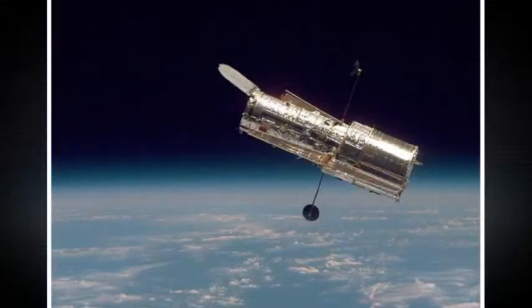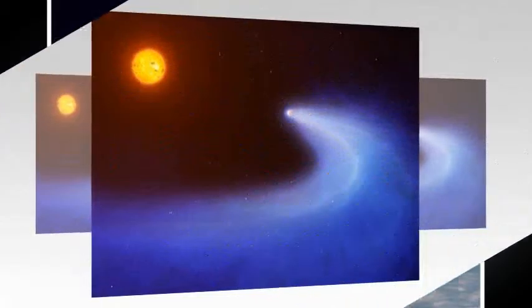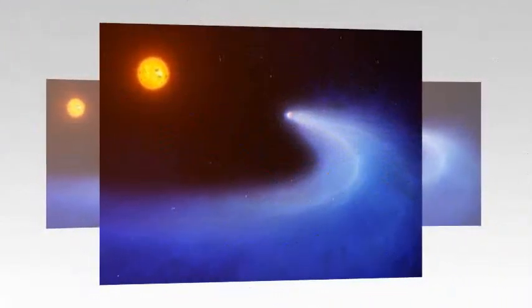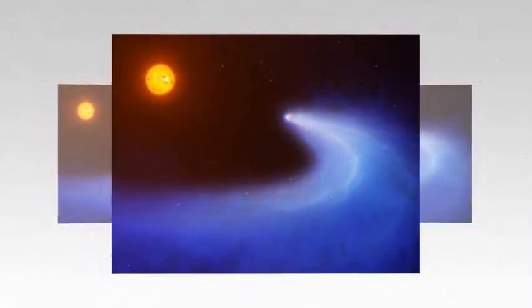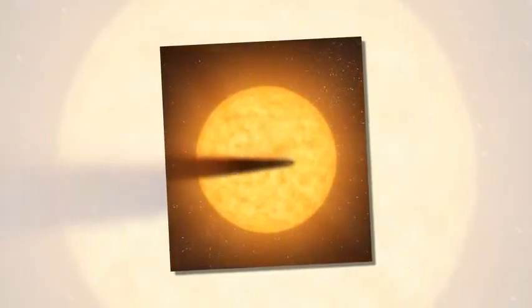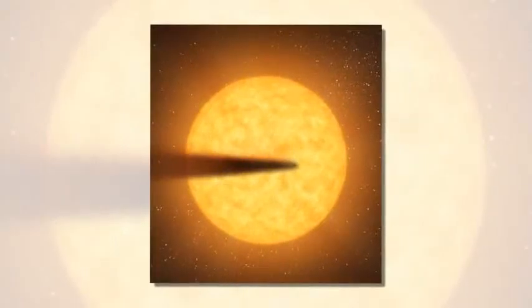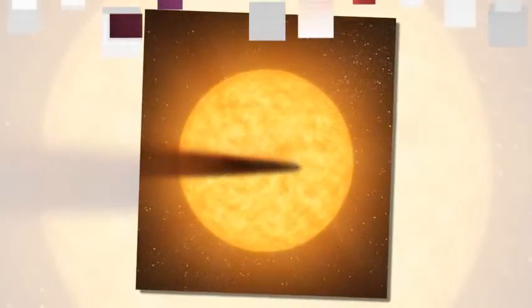The planet in this discovery, led by the University of Geneva, is not thought to be habitable. But GJ-436b, as it is called, could help explain the formation of so-called super-Earths, in addition to helping astronomers find extrasolar oceans.